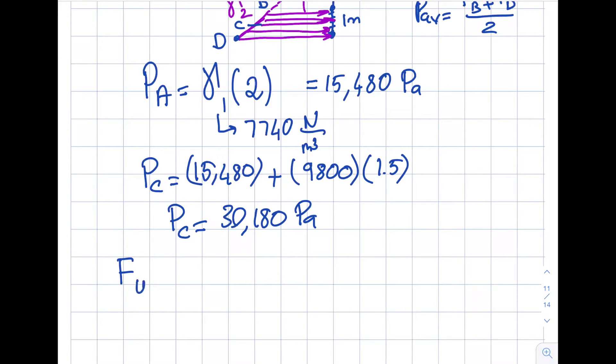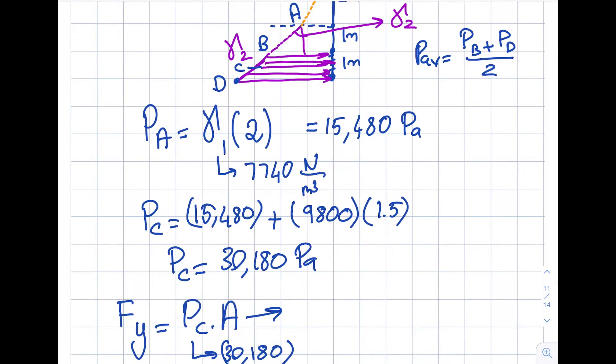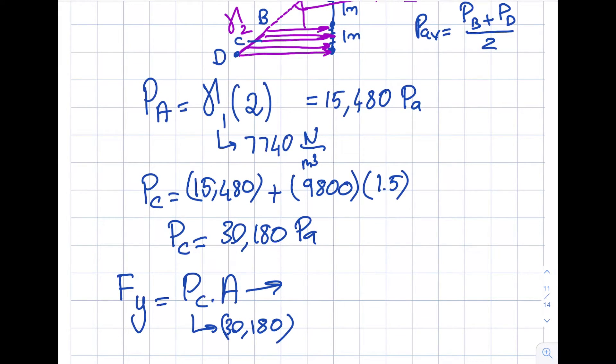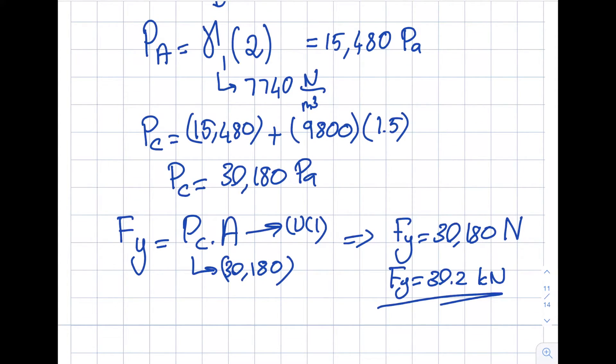As I know my PC now, my FY will be PC times area. PC is what I just found over there, 30,180, and the area itself is - let's be careful in here, I also reminded you in the previous segment - this will be the height over here. It's nothing to do with the pi r square or 2 pi r divided by 4. It's not the surface area. So then I will write here the height is 1 and going into the page is 1. Therefore my FY turns out to be 30,180 newtons. I can simply call this FY is equal to 30.2 kilonewtons. So that's my answer for the first half of the question.